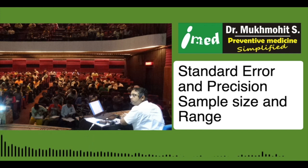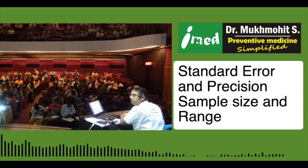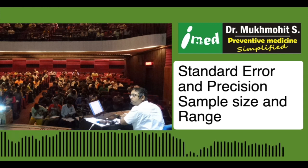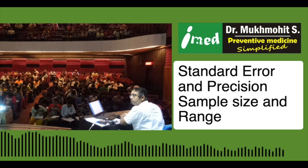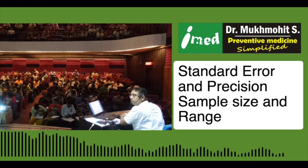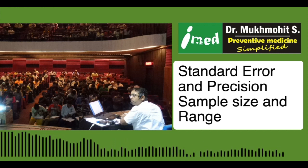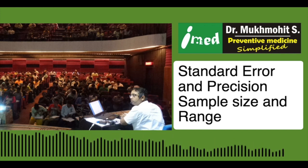If the range decreases, it follows that the standard errors would also decrease. Now, what is precision? Precision means repeatability, precision means reproducibility, precision means the probability of getting the same results again and again. So if standard errors are decreasing and there is a phenomenon of regression towards the mean — reverting back towards normalcy when we gather huge amounts of data — what happens to precision? Precision has to increase.